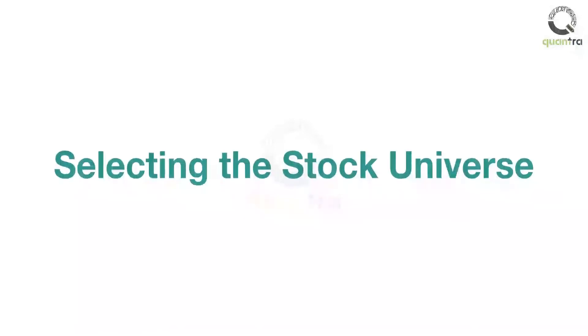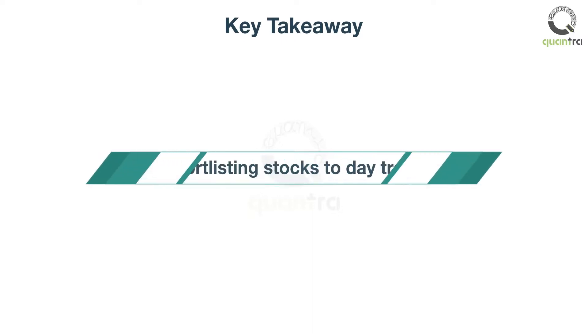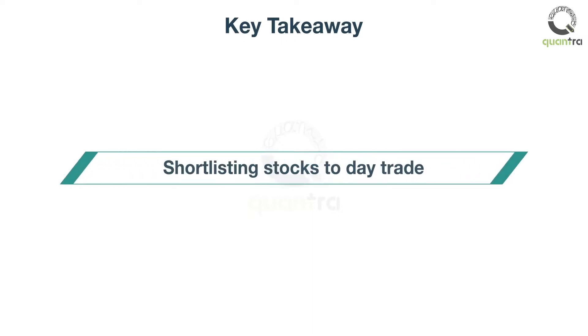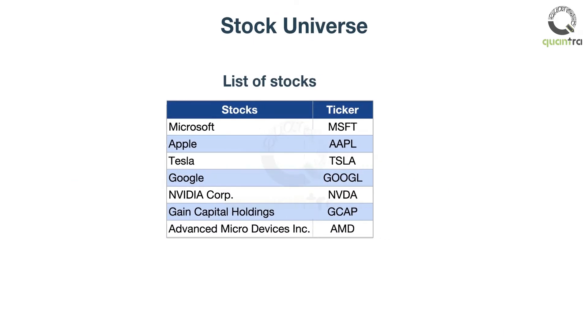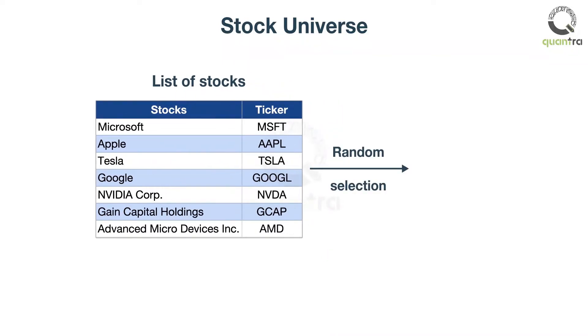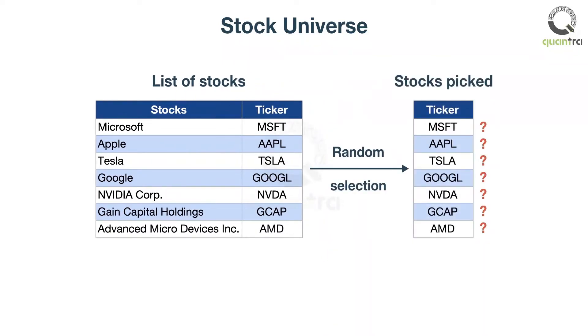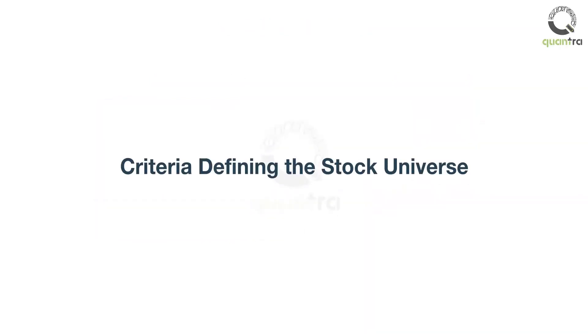Welcome to this video on selecting the right stocks for day trading. After this video, you will be able to shortlist stocks based on certain conditions. A stock universe is the list of stocks that are suitable for day trading. If you don't define the universe and randomly trade in any stock, you might end up with stocks which you wish you hadn't traded. The following are important criteria in defining the stock universe.